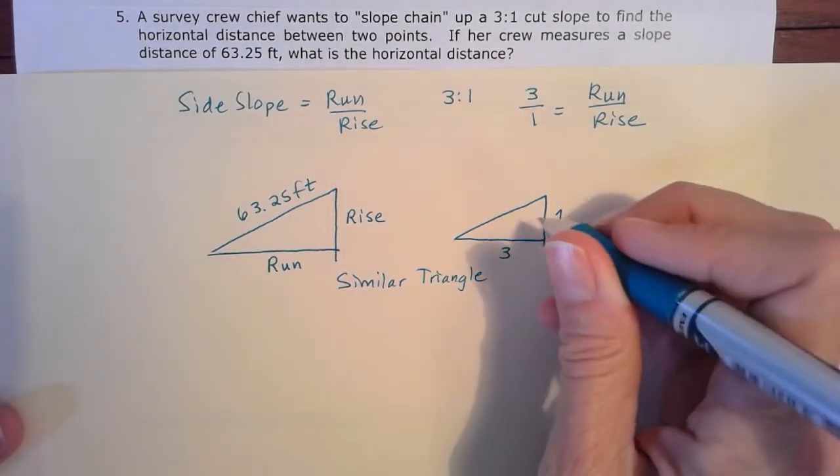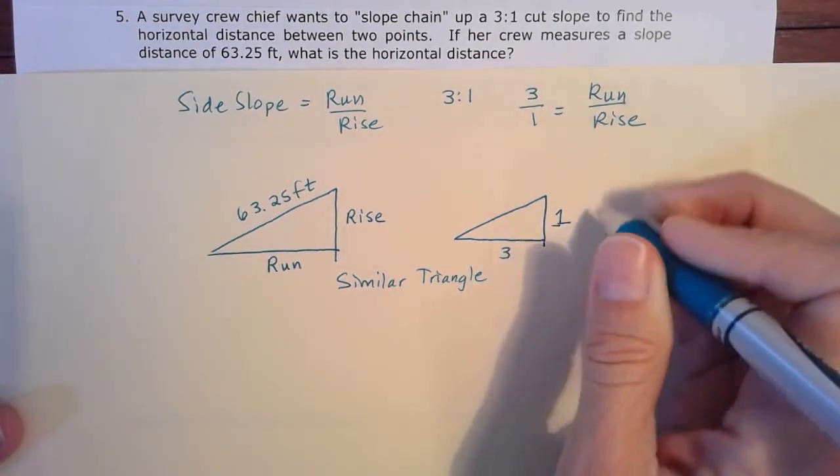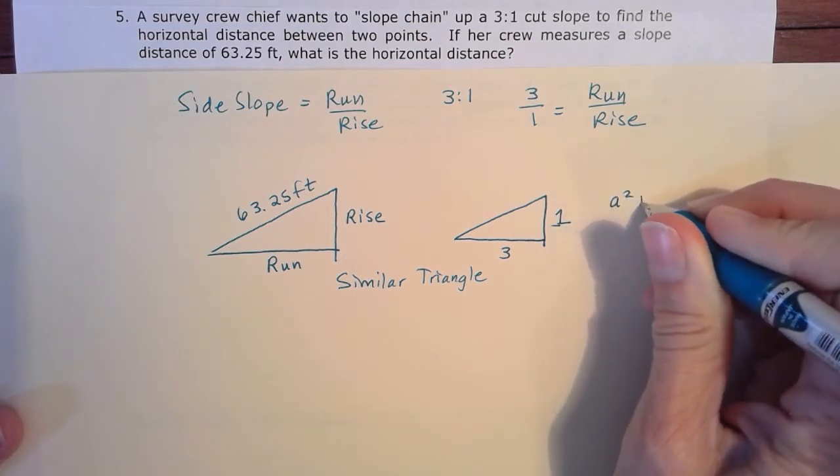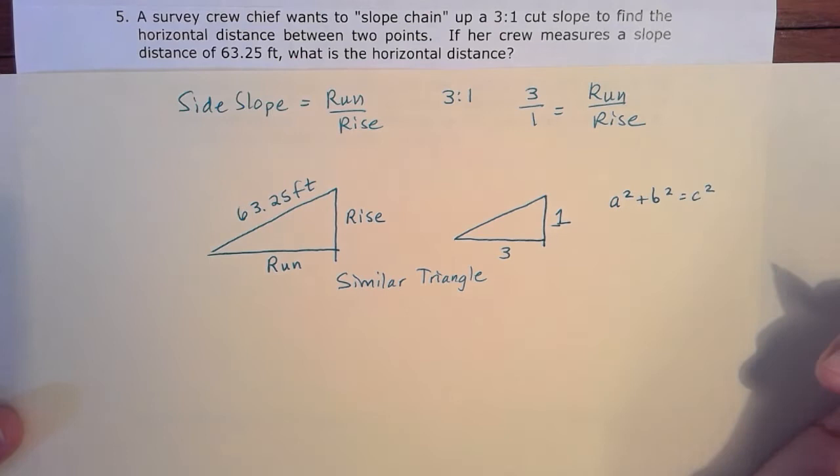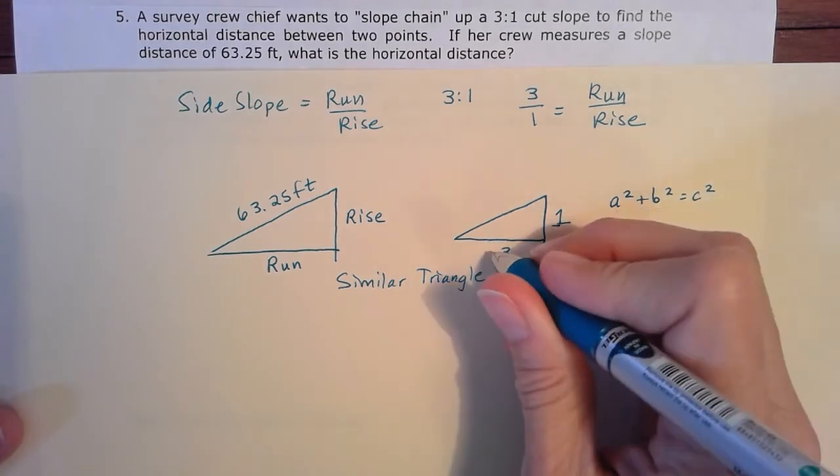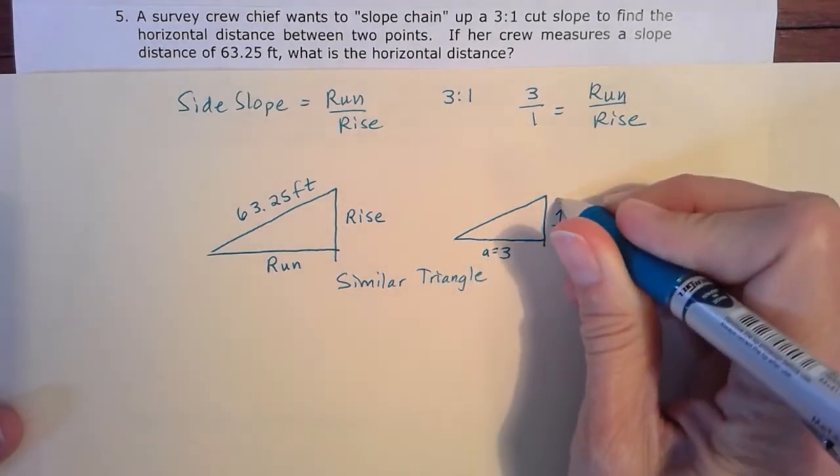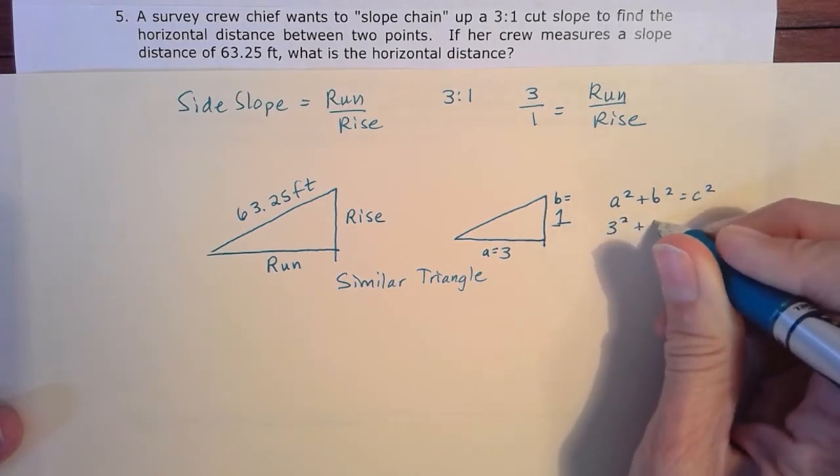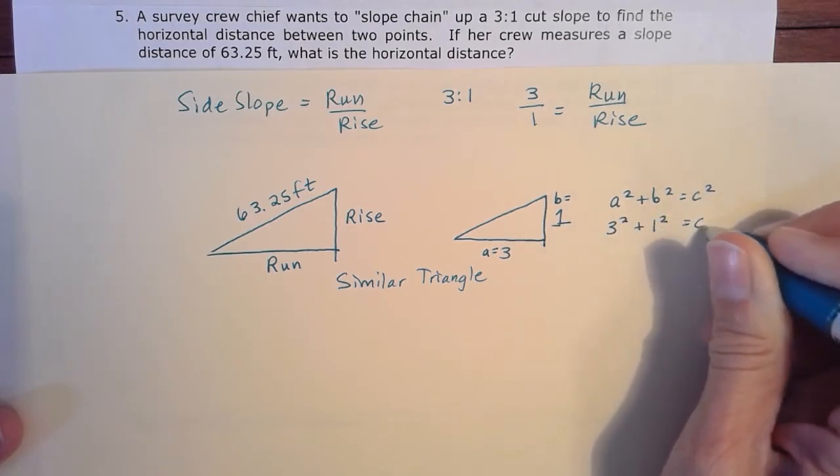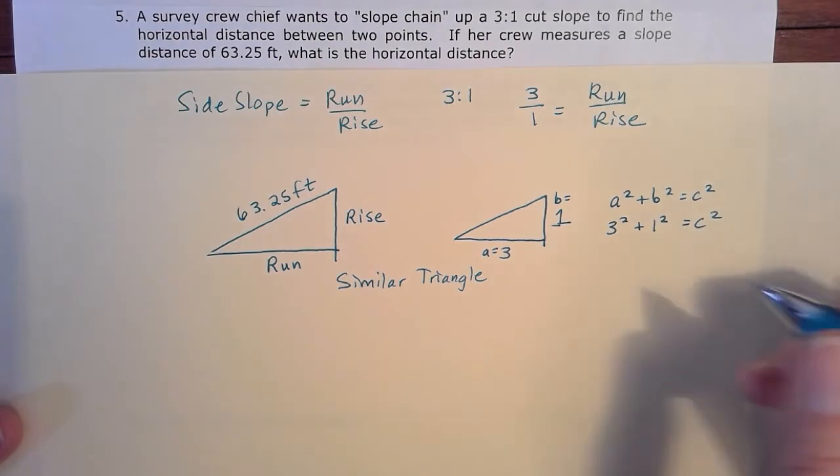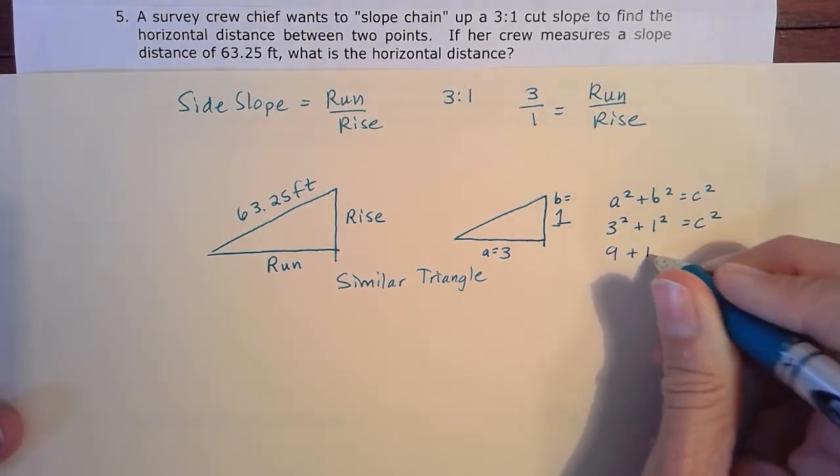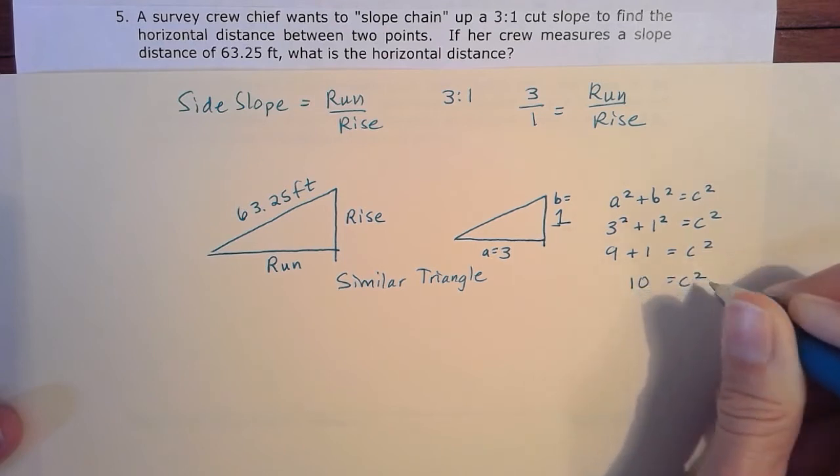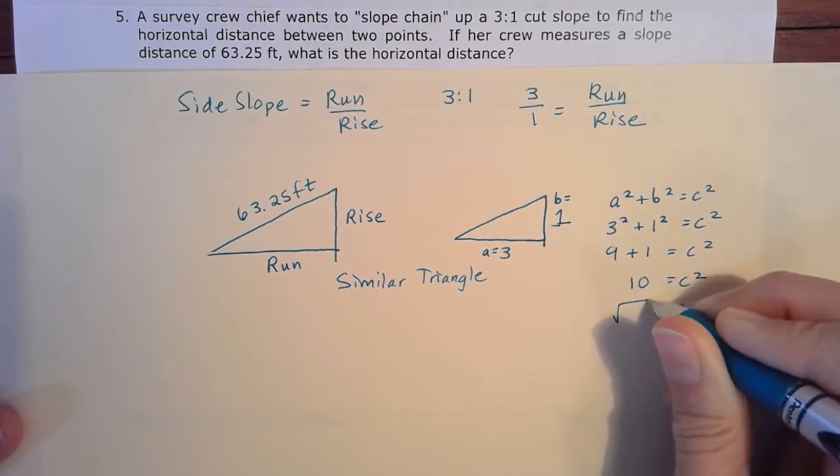So we can know with these dimensions, using our Pythagorean theorem, that remember A squared plus B squared equals C squared. Okay, if we call leg A three and leg B one, we wind up with three squared plus one squared equals some C squared here. So that becomes nine plus one equals C squared. So C squared is going to equal ten. So C is going to be the square root of ten.